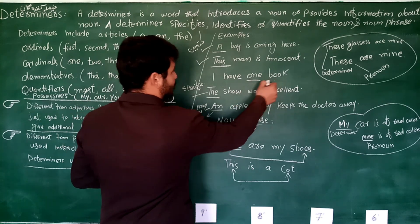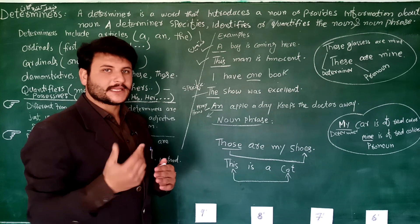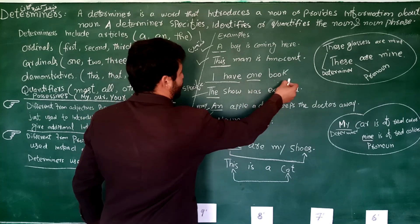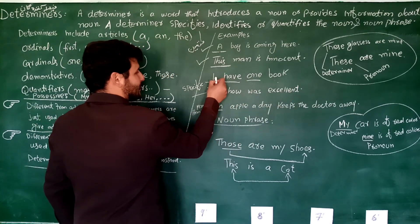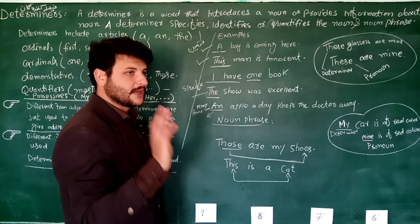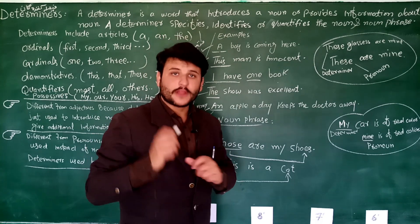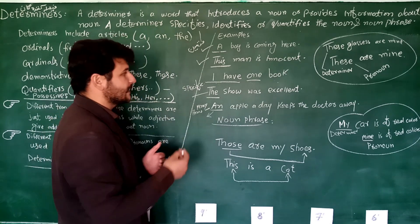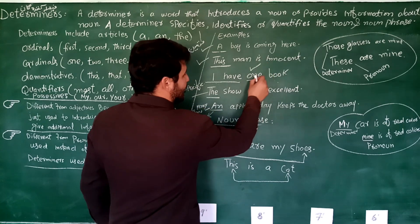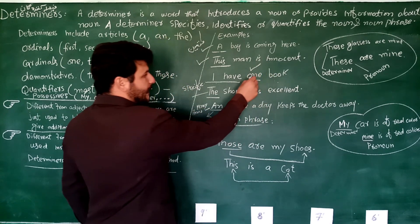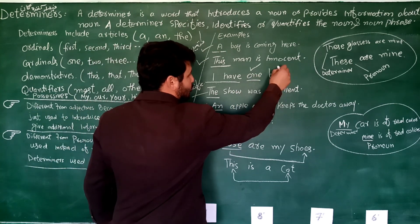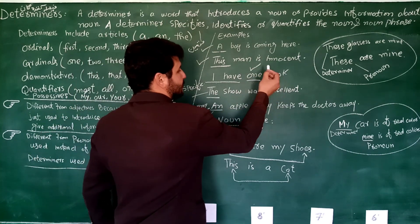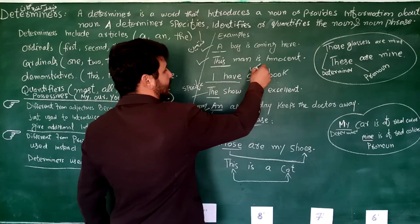'I have one book.' Aap yahan par ziyada tar viewers jo hain, woh confused honge. Yahan par aap dekhen to 'I have one book' - yahan par determiner jo hai yahan par istimal nahin huwa hai, lekin jaisa ki hum ne bataya ke yeh specify karta hai. To yahan par aap dekhen - 'one book' jo hai, yeh 'one' - yahan par cardinal jo hai - yahan par istimal huwa hai. 'One book' - to yeh 'book' jo hai yeh noun hai aur 'one' jo hai is specify it - it specifies the very noun 'book'. So here 'one' is known as determiner.